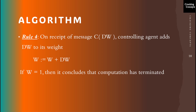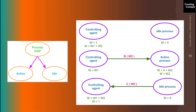Rule 4: on receipt of a control message with weight DW, the controlling agent adds this weight to its own weight, so its new weight becomes W = W + DW. If the weight equals 1, it concludes that the computation has terminated. As shown in the diagram, when the control message reaches the controlling agent, its previous weight was W1; it adds W2 to get a final weight of 1. Since the weight is 1, the task has terminated.